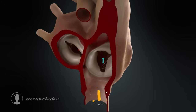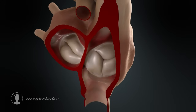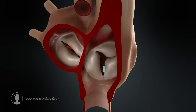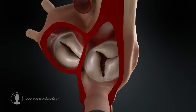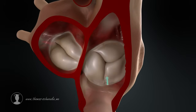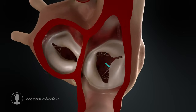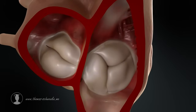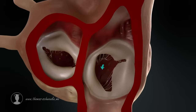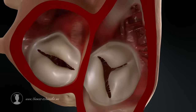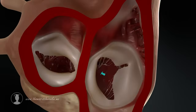When the atria of the heart contract, the atria's space becomes smaller. The resulting pressure causes the blood to push the leaflets towards the ventricles, allowing the blood to be pumped from the atria into the ventricles.